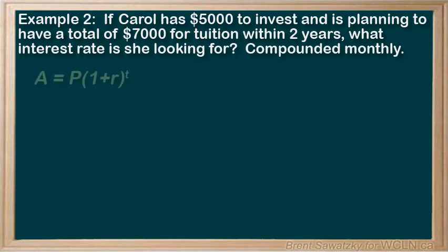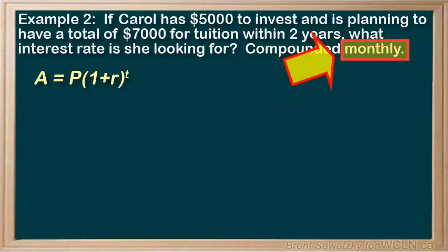Let's start by writing down our compound interest formula. A equals P(1 plus r) to the t. Where our compounding period is, well, we're told that it compounds monthly. So compounding period would be 1 month.